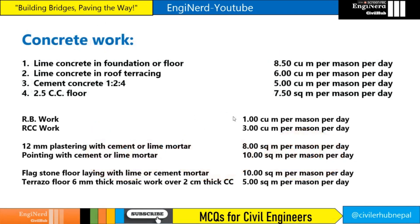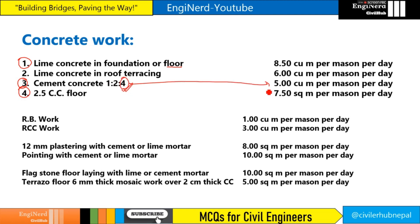For concrete work: lime concrete in foundation or floor is 8.5 cubic meter per mason per day, and lime concrete in roof terracing is 6.0 cubic meter per mason per day. For cement concrete 1:2:4, the outturn is 5 cubic meter — a mnemonic is that after 4 comes 5. For 2.5 cm cement concrete floor it is 7.5 square meter per mason per day.